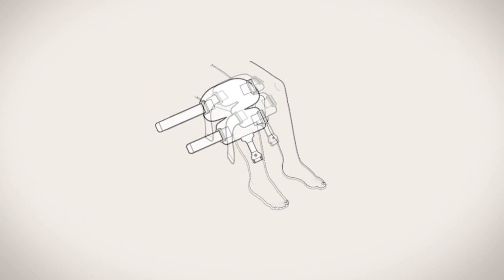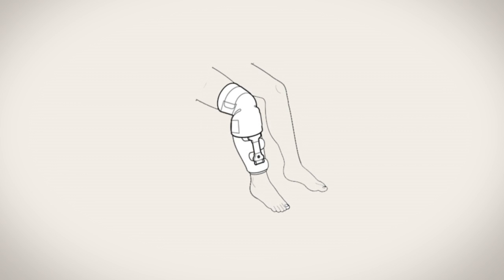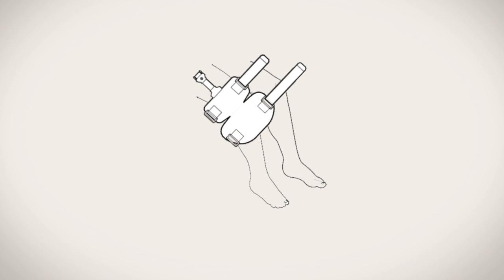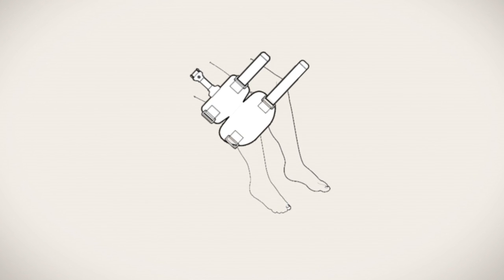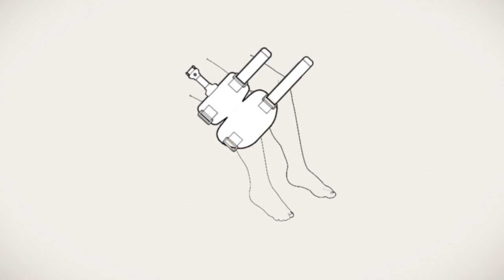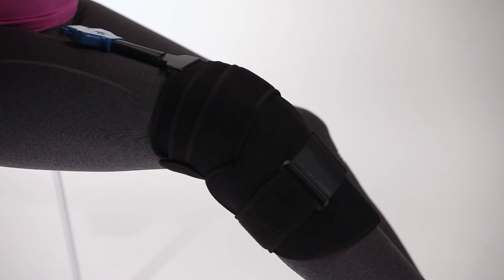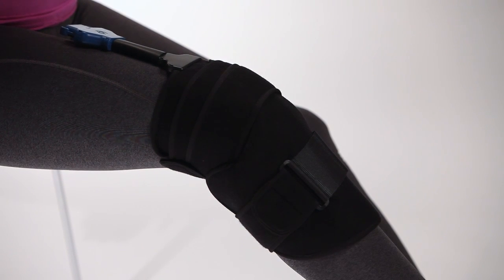Strap the universal pad so it is centered and fits snugly over the knee. The universal pad may be positioned differently on the knee if you want to route the tubing set another way. The pad should be secure but does not have to be overly tight.